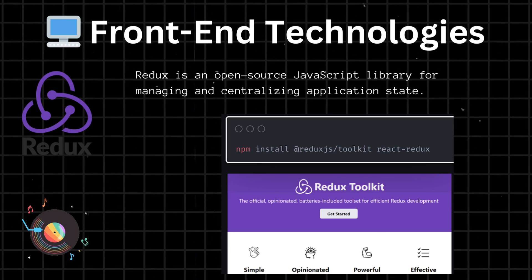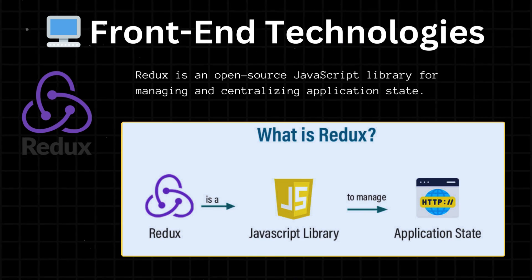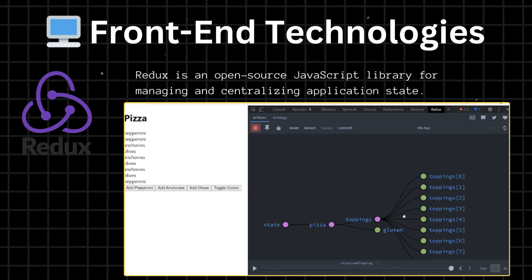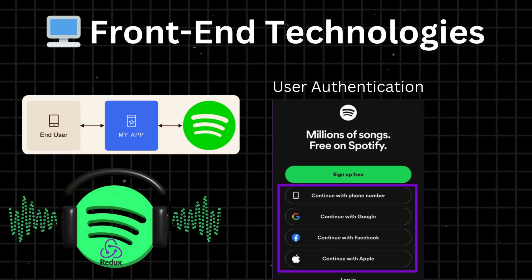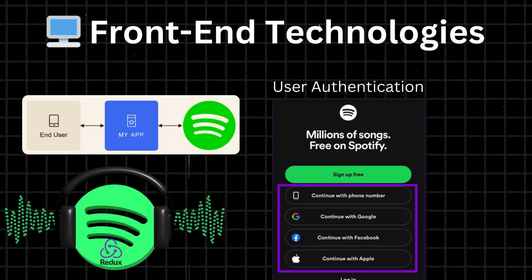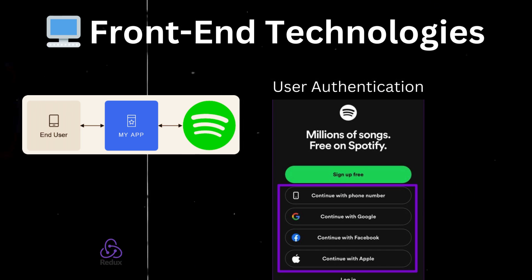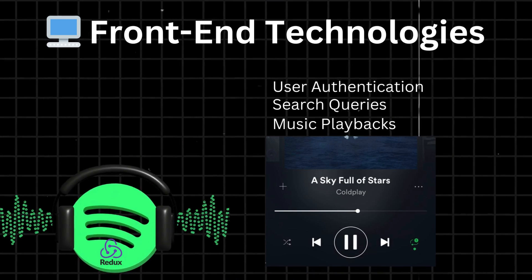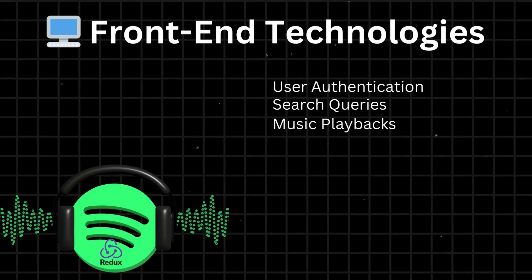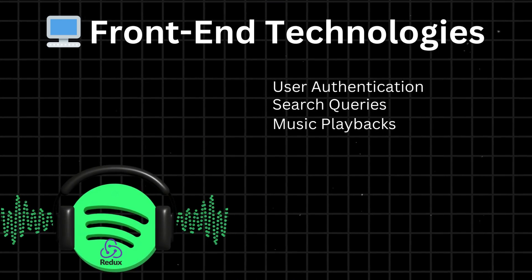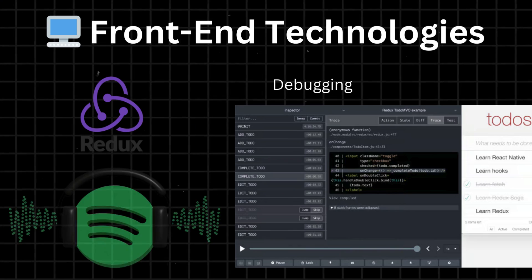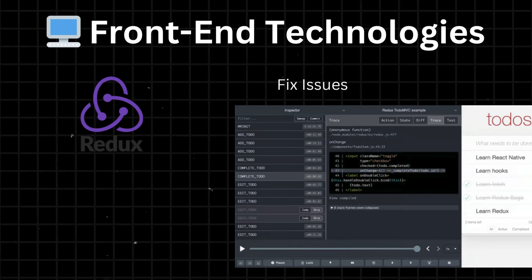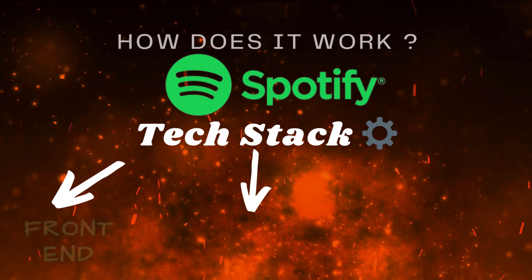Redux. Spotify uses Redux to manage the state of its front-end applications, including web and mobile applications. With Redux, Spotify can keep track of complex state such as user authentication, search queries, and music playback status. This makes managing and updating the application's state easier. Redux also provides tools for debugging and tracing changes to the application, making it easier to identify and fix issues.